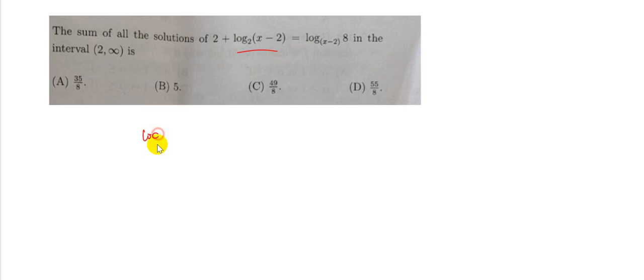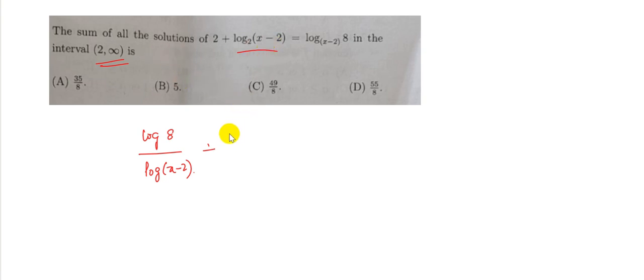The second question was: find the sum of all solutions of 2 + log(x−2) base 2 = log 8 base (x−2). When dealing with problems like this, we segregate the log functions. Transposing, we get log 8 to the base (x−2) = log 8 / log(x−2), and since the interval is (2, ∞), log(x−2) is always positive. So minus log(x−2) to the base 2 equals log(x−2)/log 2, and this equals 2.